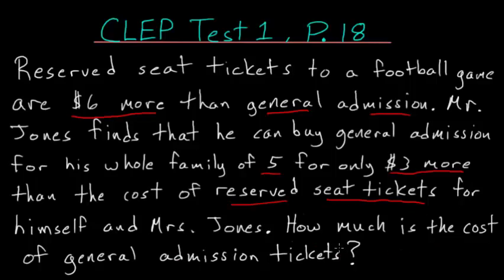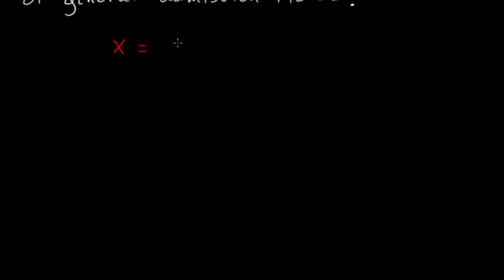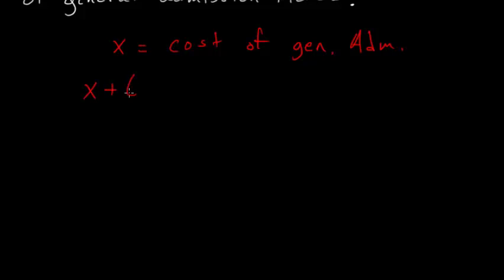In this problem, since we're looking for the cost of general admission tickets, we need to create a variable to represent this. So let's say that x is equal to the cost of general admission. We know that six dollars more than that cost is the cost of reserved seats.